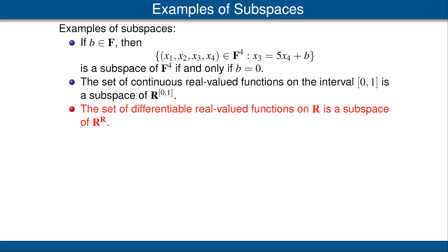Our third example is similar. Now we will consider the vector space of all real-valued functions defined on the real line. Our subset U is the set of all differentiable real-valued functions defined on the real line, and again this is a subspace. The constant function 0 is differentiable — that's the first condition. The sum of two differentiable functions is differentiable — that's the second condition. A constant times a differentiable function is differentiable — that's the third condition. Notice that in both of the last two examples it's natural to think about subspaces because it reflects properties of continuity and differentiability.